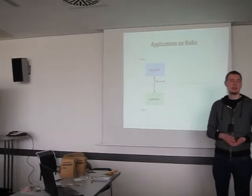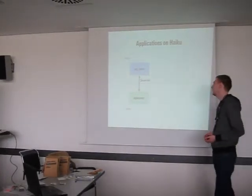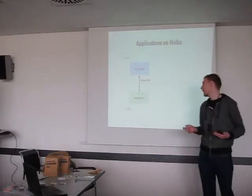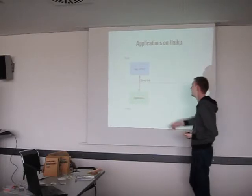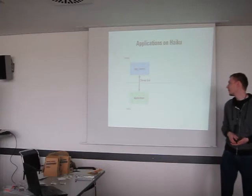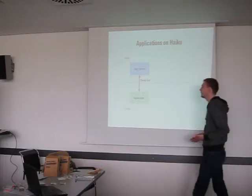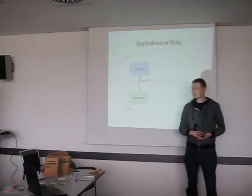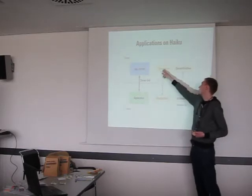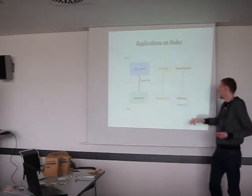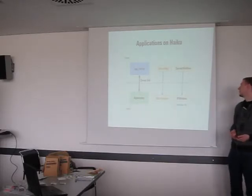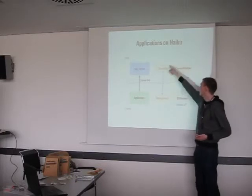The application model on Haiku is a client-server model where applications talk to servers provided by the system. The servers are basically applications themselves. This communication is done through a server link, which is a way of doing message passing between the application and the servers — under the hood, basically a kernel port. If you create a BApplication object, it talks to an object called ServerApp in the AppServer, and a BWindow has a mirror called the server window.